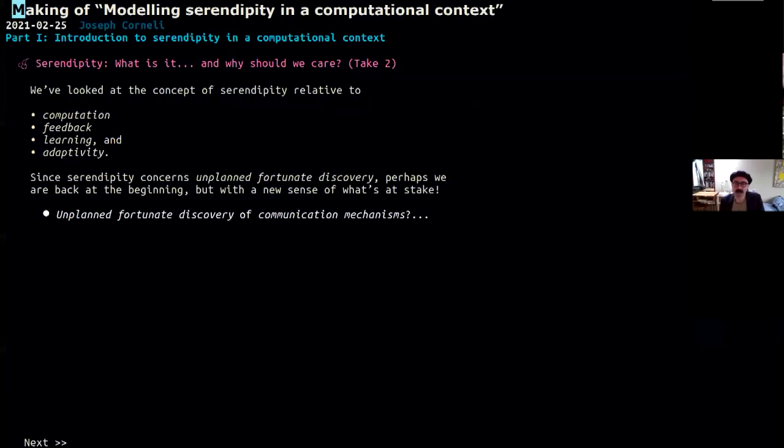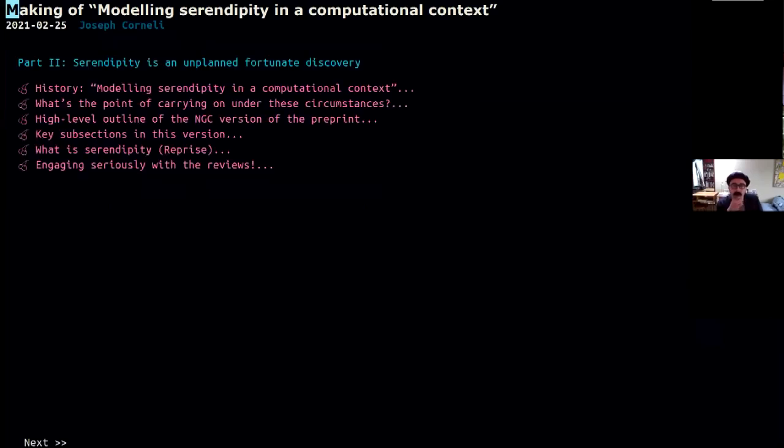So yeah, take two, serendipity. What is it and why should we care? We've looked a little bit at the concept of serendipity through these different lenses of computation, feedback, learning, and adaptivity. Framing it as an unplanned, fortunate discovery seems to work. And actually now we're almost back at the beginning because we can now start to think about the unplanned, fortunate discovery specifically of communication mechanisms. And that's a good chance for me to take a little breath and for us to move on to part two.